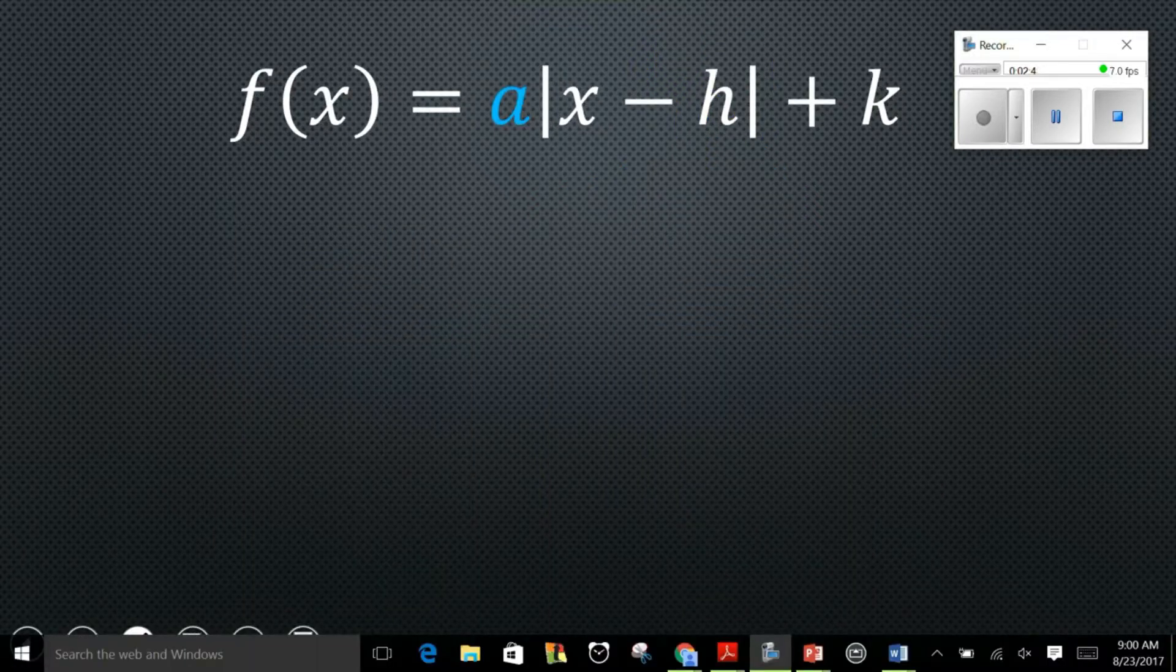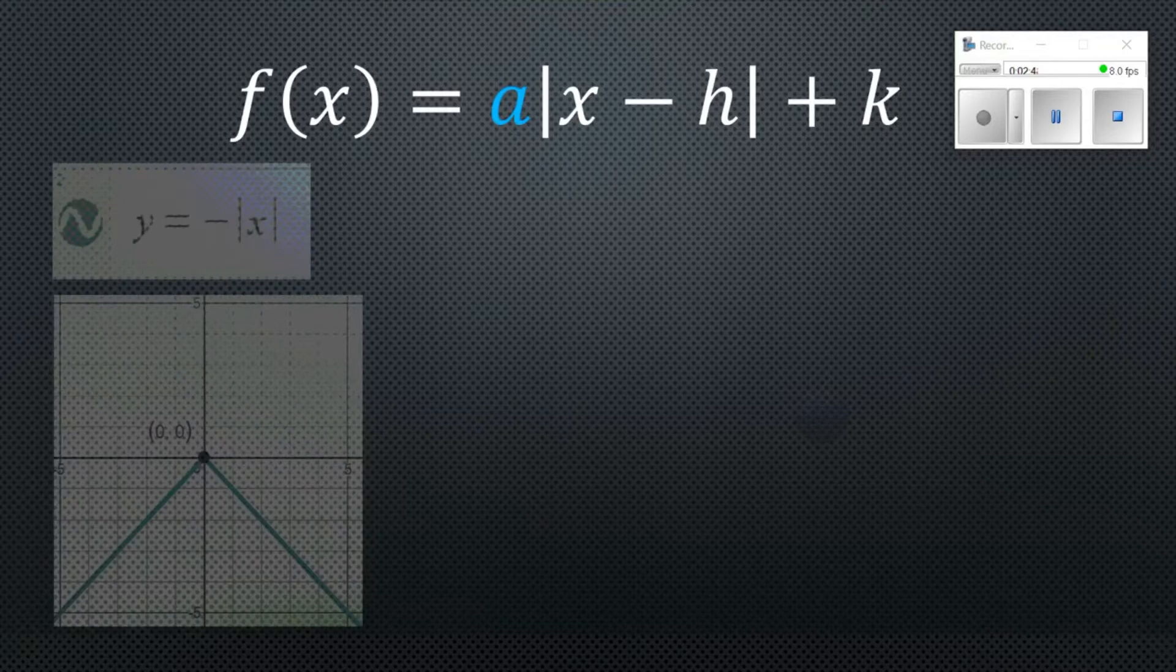The next piece that we need to look at is what the a value does, so the part in front of the absolute value symbol. What is that going to do for our function? So let's look at a couple examples here.